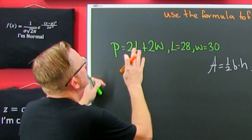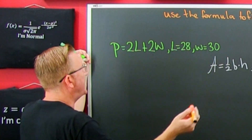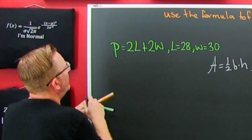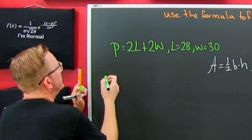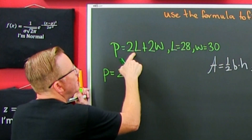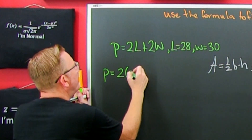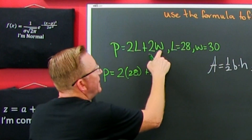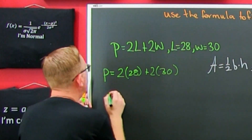Up here I'm looking to see P is 2L plus 2W. That might look familiar to a few of you. So let's go ahead and plug in what we need to do. So I see my P is gonna be 2 times — my new L is 28, and my new W is 30.